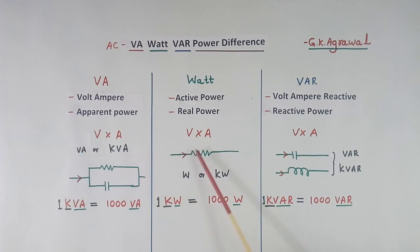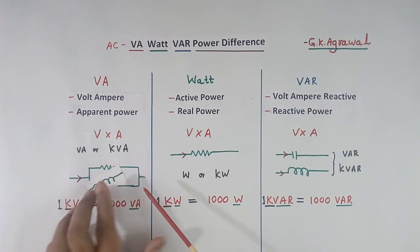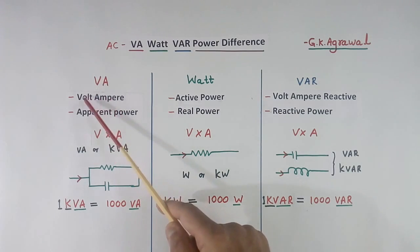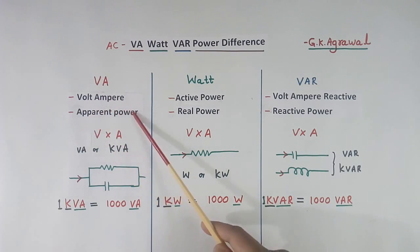When both are there, resistor and capacitor or inductor, if both are there, then the total current multiplied by voltage will give volt ampere or apparent power.